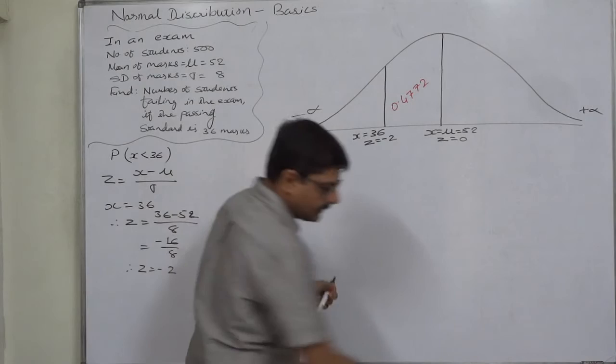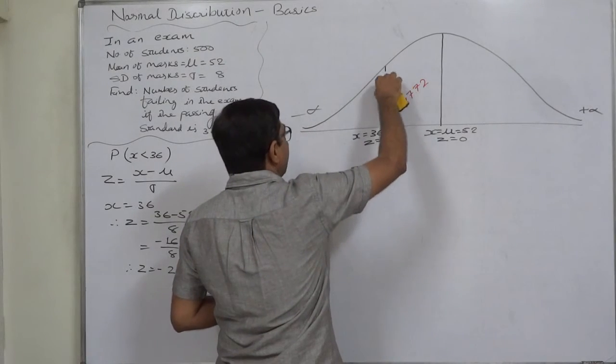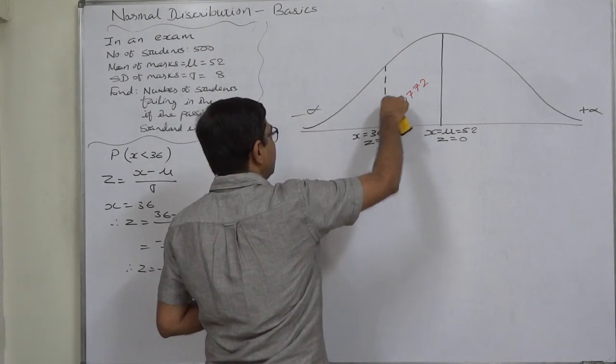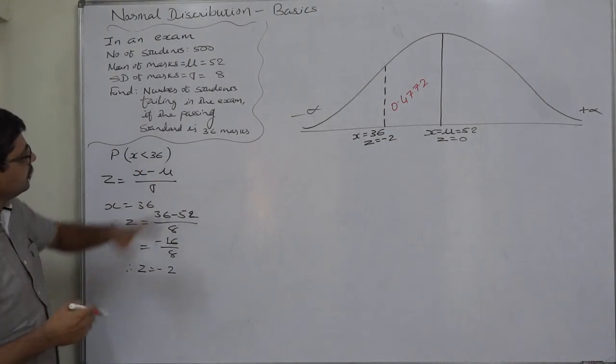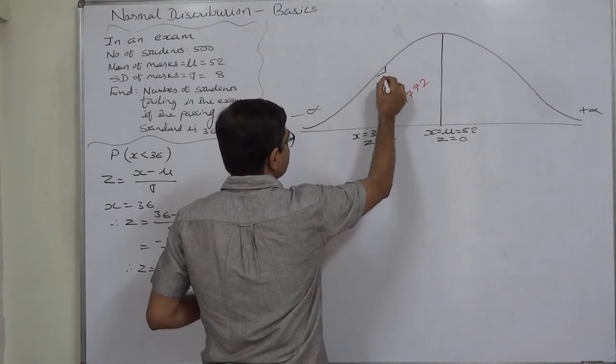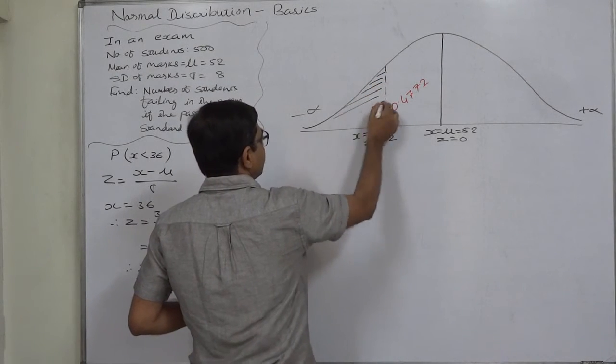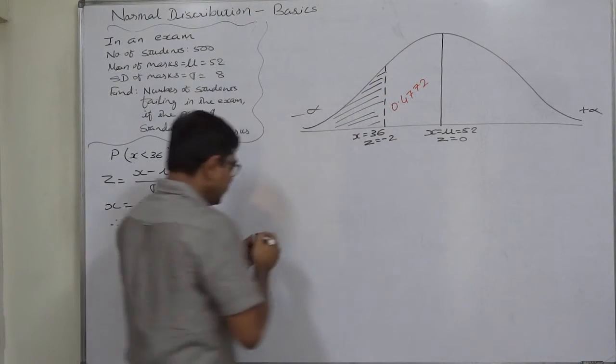But we are interested in the area which is relevant to X less than 36 because we want to find the number of students failing in the examination. We are interested in this area.